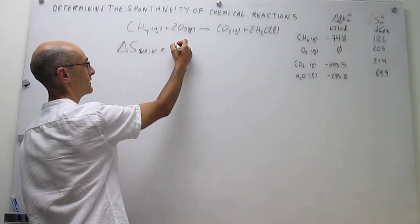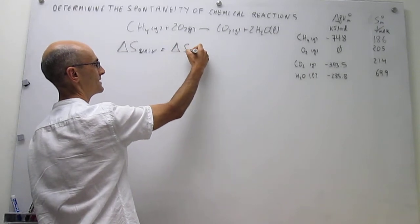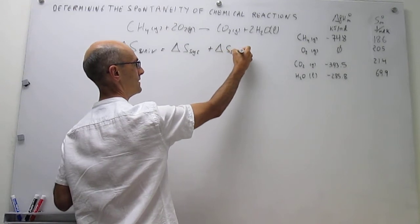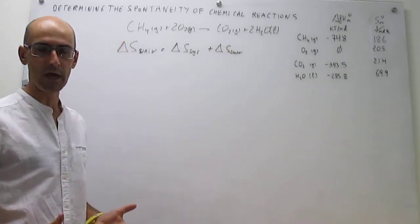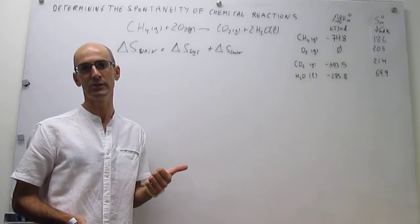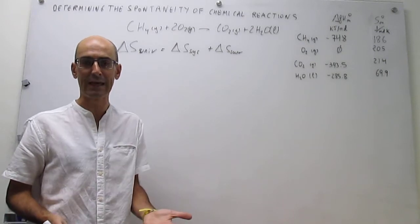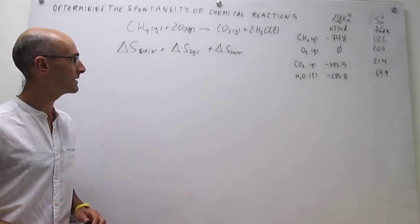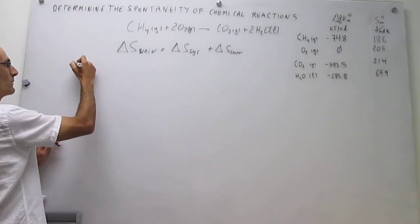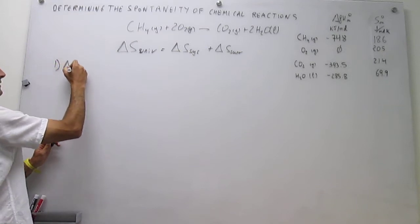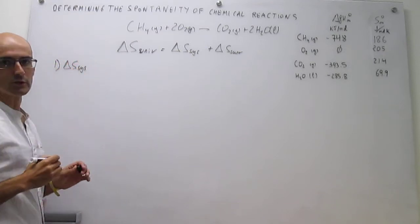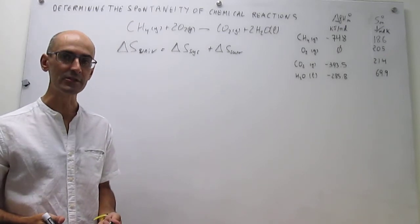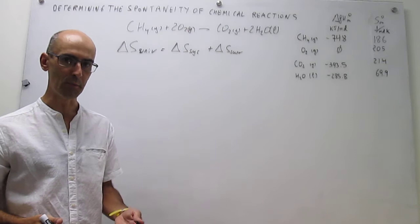The entropy of the universe is just the sum of the change in entropy in the system and the surroundings. So there are two calculations that we have to do here. First, calculate the change in entropy in the system, which is the chemical reaction. And then calculate the change in entropy in the surroundings. Let's get started with the system. We are going to do this on a per mole basis, so all units will be joules per mole per Kelvin.